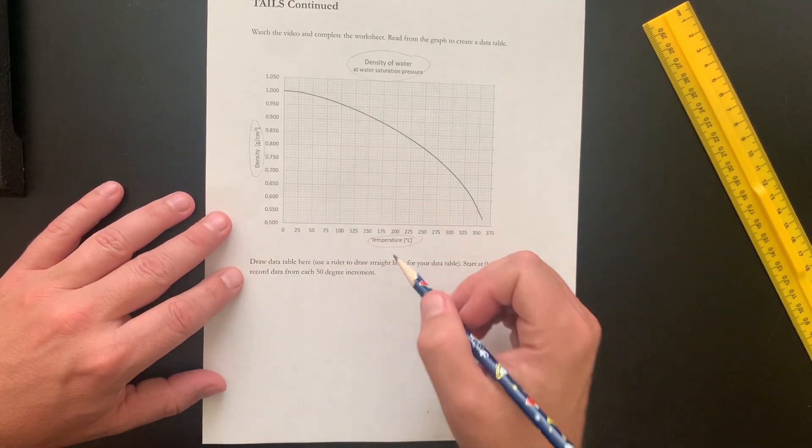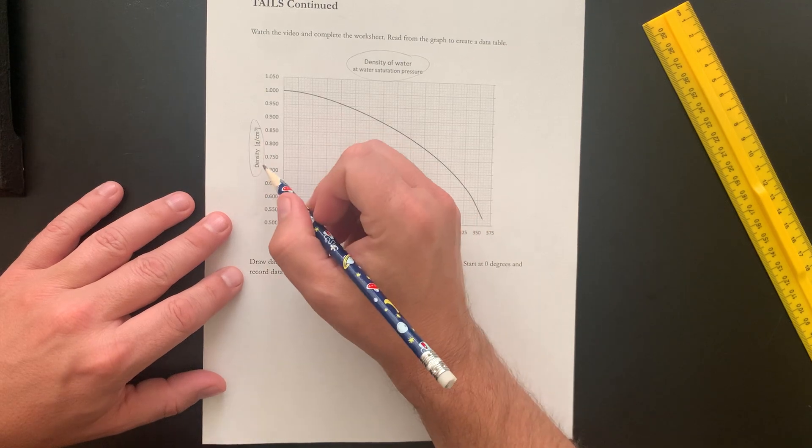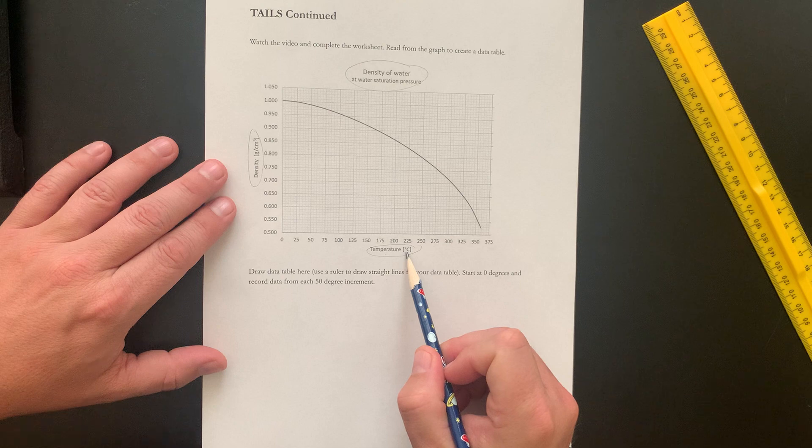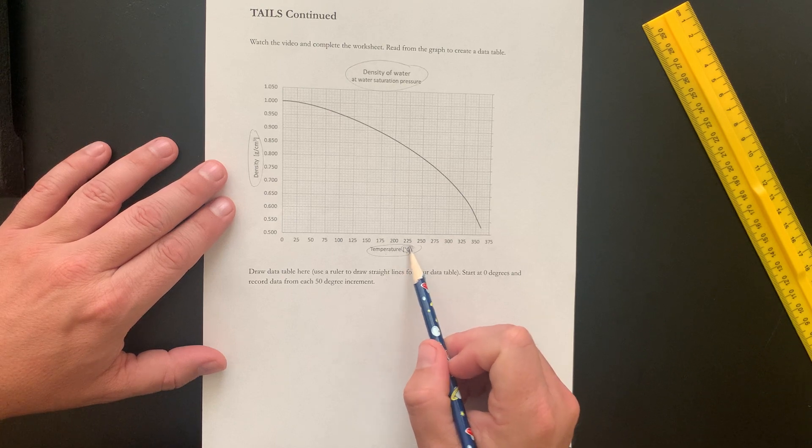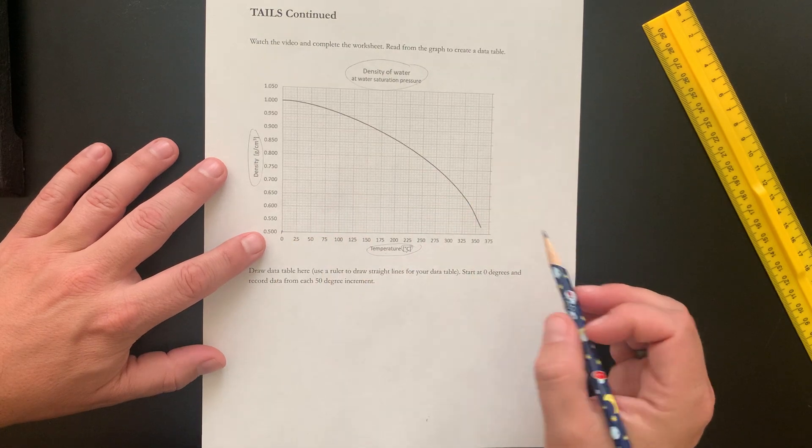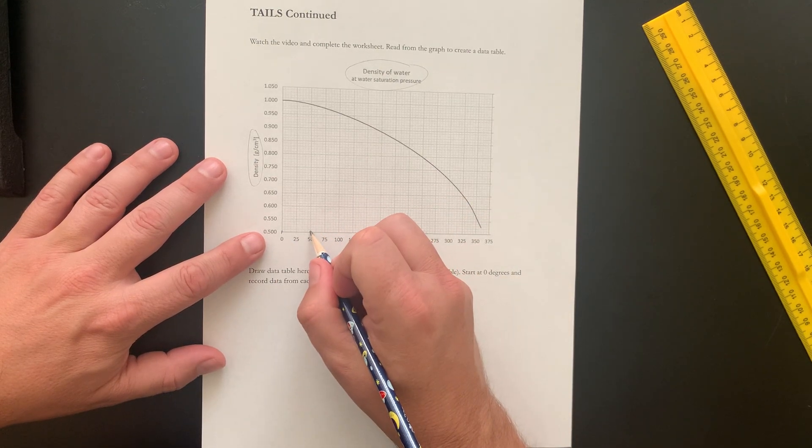So which one of these is degrees? Is density in degrees? No. Is temperature in degrees? Yes. Temperature is in degrees Celsius. I'm going to start at zero. I'm going to record every 50.